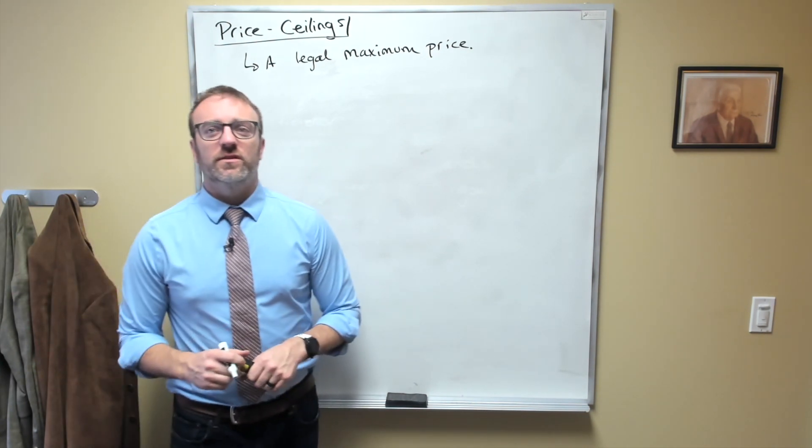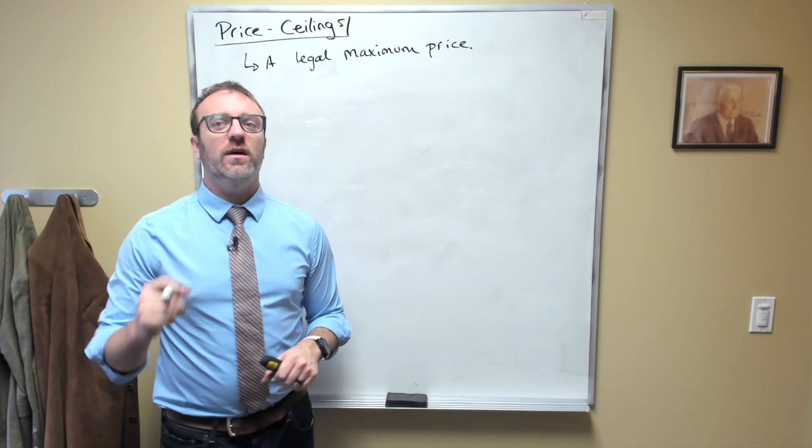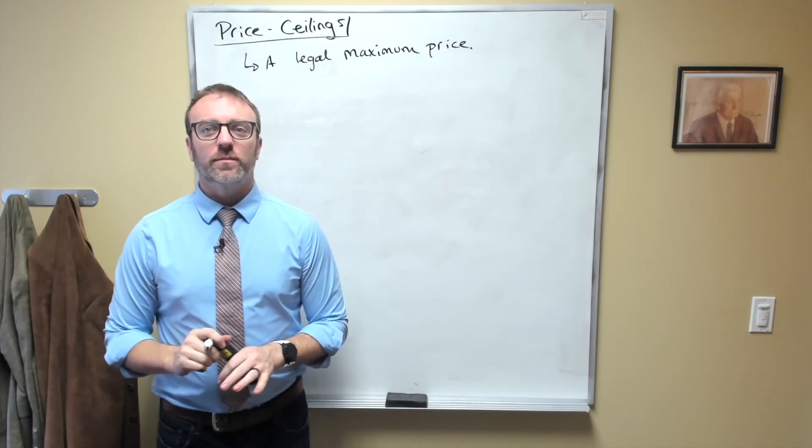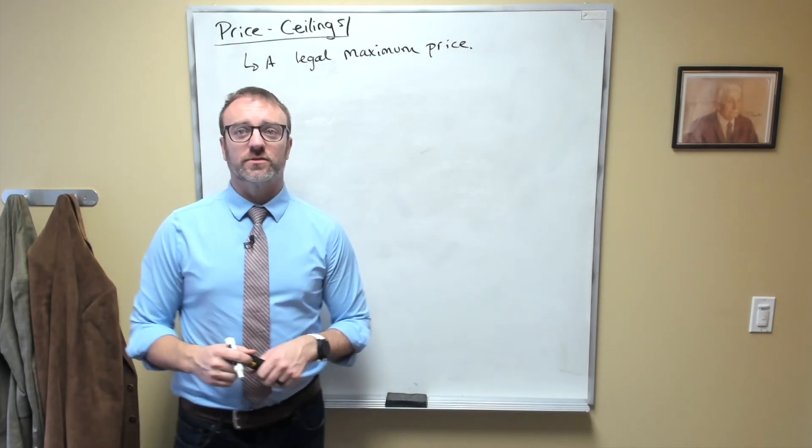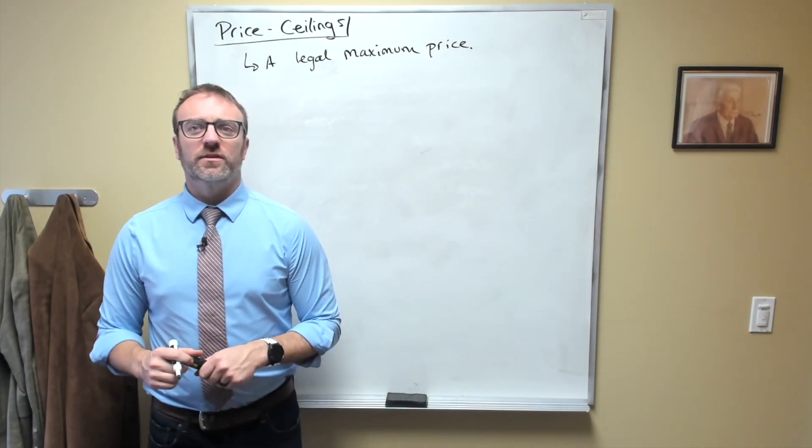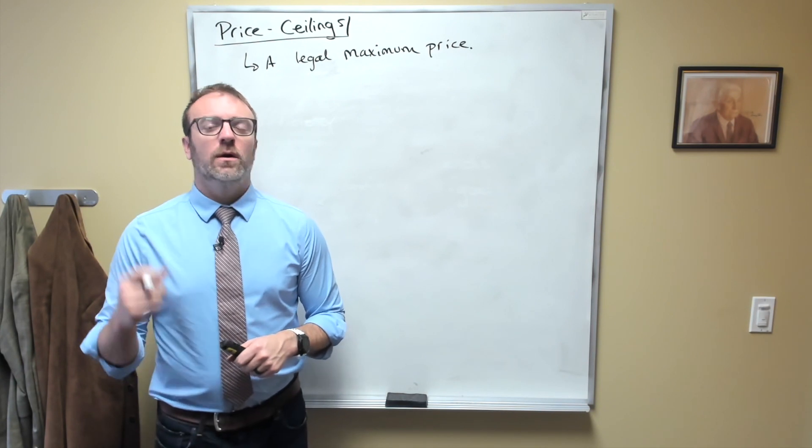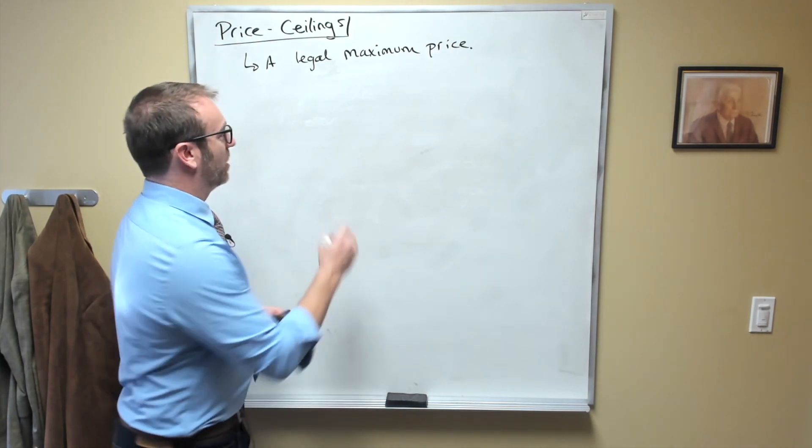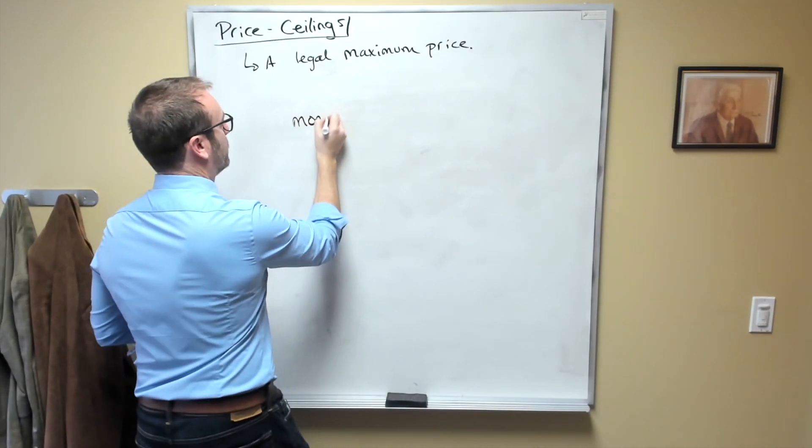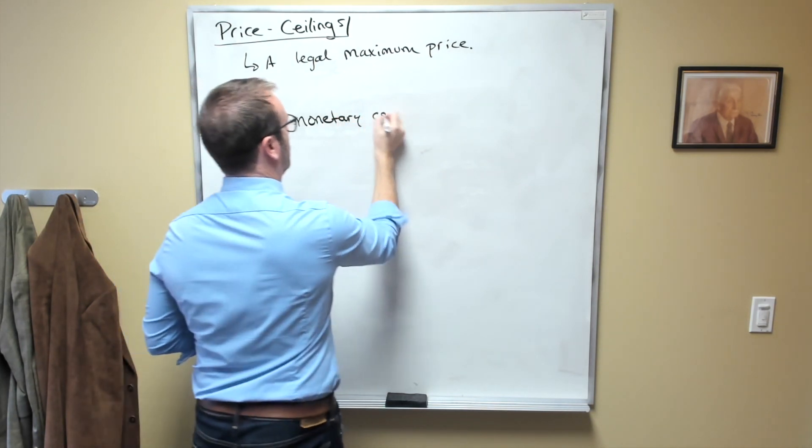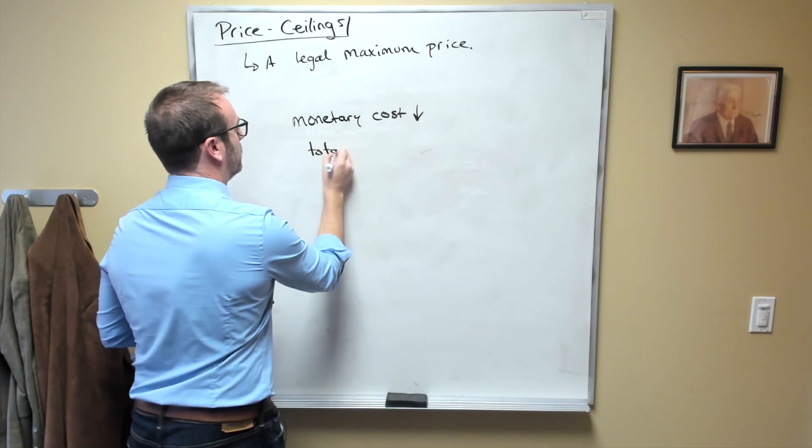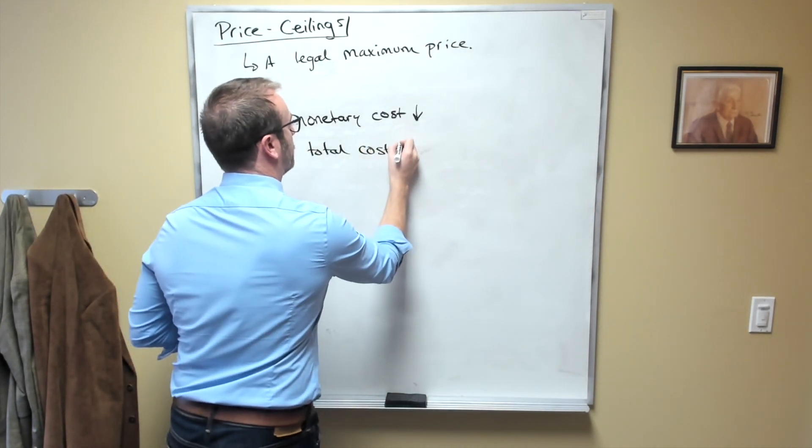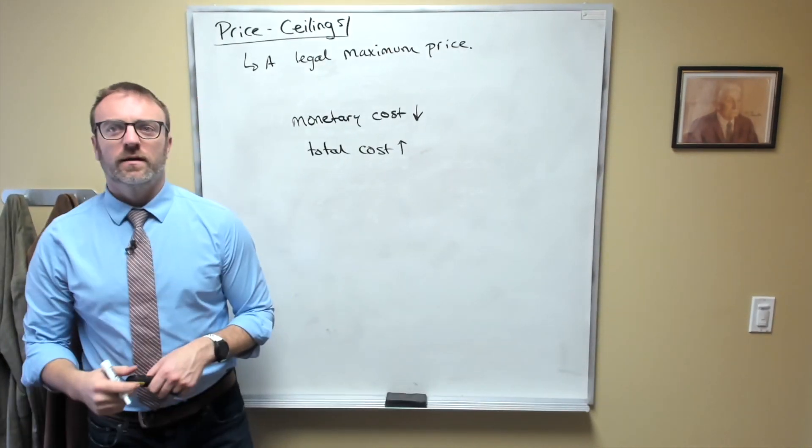When a price ceiling is in effect, sellers are not allowed to charge any more than whatever number of dollars is decreed to be correct for a good or service. So wouldn't a price ceiling make things cheaper? While they do reduce the monetary cost, the total cost ends up increasing. How is that?